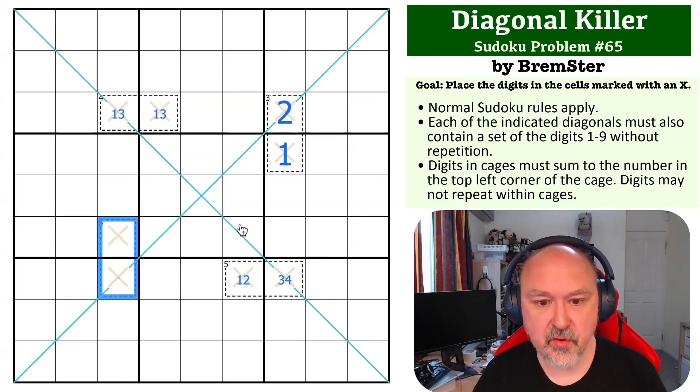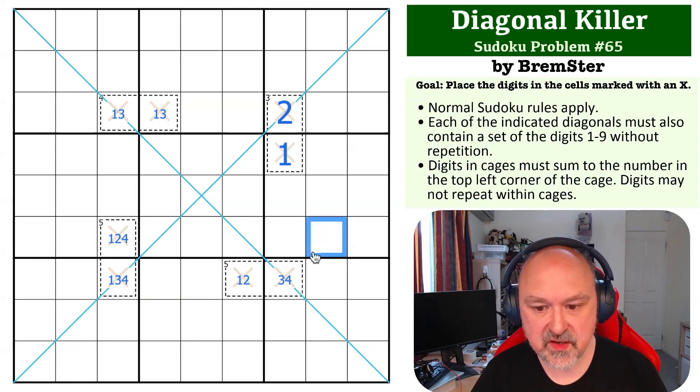...is these four digits here cannot repeat. So this digit here can be only one, three, or four because you can't use a digit higher than four in a five cage. So this digit must be one four or two. So you end up with this situation. Now what happens if this is a three?